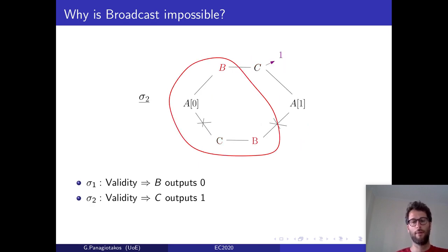Symmetrically, in the second scenario, B is corrupt, and drops all communications with the sender. In the eyes of C, B acts as if A was broadcasting 0. Again, in reality, A is broadcasting 1, and by validity, C should output 1.